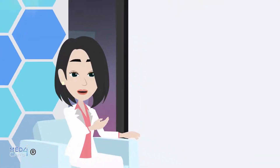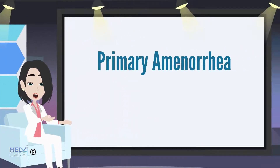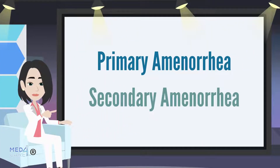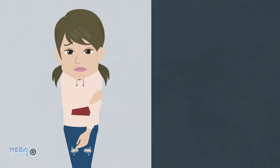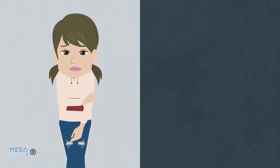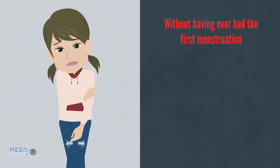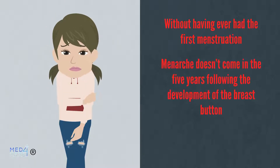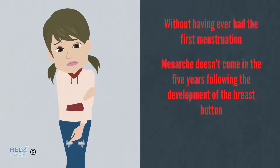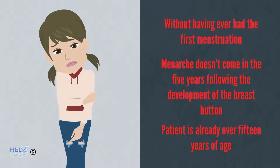Amenorrhea disorders are classified into primary and secondary amenorrhea. The first type consists in the absence of menstruation already from puberty, without having ever had the first menstruation, called menarche. Primary amenorrhea must be taken into consideration when the menarche does not come in the 5 years following the development of the breast button, or if the patient is already over 15 years of age.